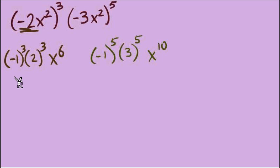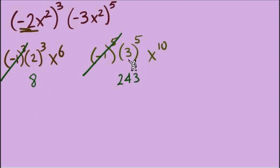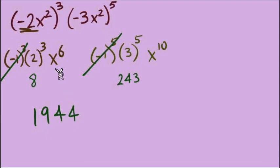Let's put our answer together. Looking at the total negative 1s: we have 3 here and 5 here, a total of 8. With 8 negatives — an even number — the answer is positive. Those are done. Now for the numbers: 2 to the 3rd is 8, and 3 to the 5th is 243, and multiplying those together gives 1,944. Combining the x's: x to the 6th times x to the 10th is x to the 16th. We have no negative exponents and no fractions to simplify, so we're finished.